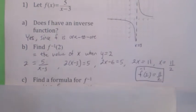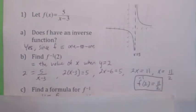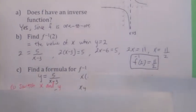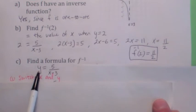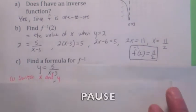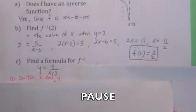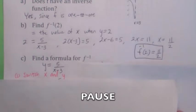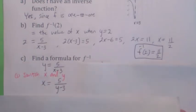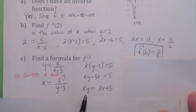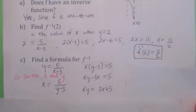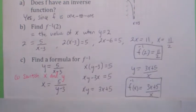Let's find a formula for f inverse of this function. When doing that, it's nice to write y instead of f(x). Hit the pause button, switch x and y, then solve for y. After switching x and y, you cross multiply, use the distributive law, and add 3x, then divide by x. So f inverse of x is (3x + 5) / x.